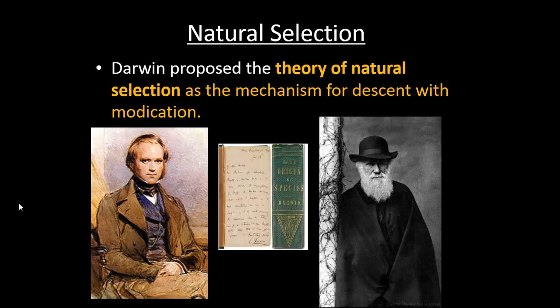Darwin was the first to actually find a mechanism that could explain how evolution works, and we call that natural selection. Over time, natural selection shows that evolution is possible and can influence how organisms grow and develop.